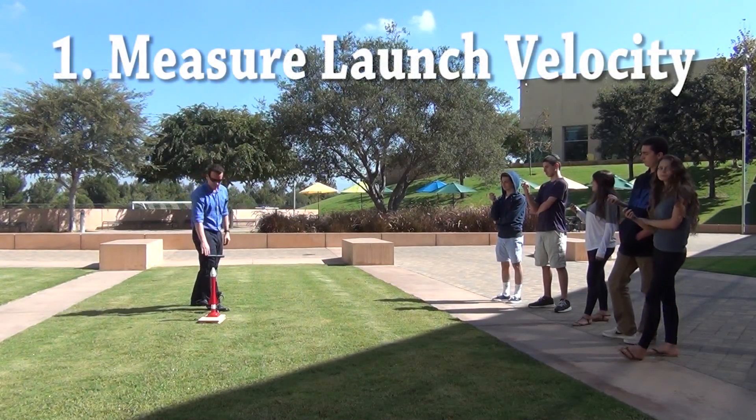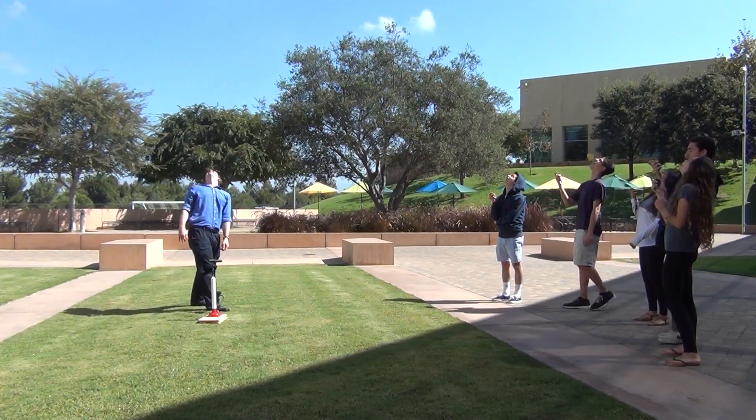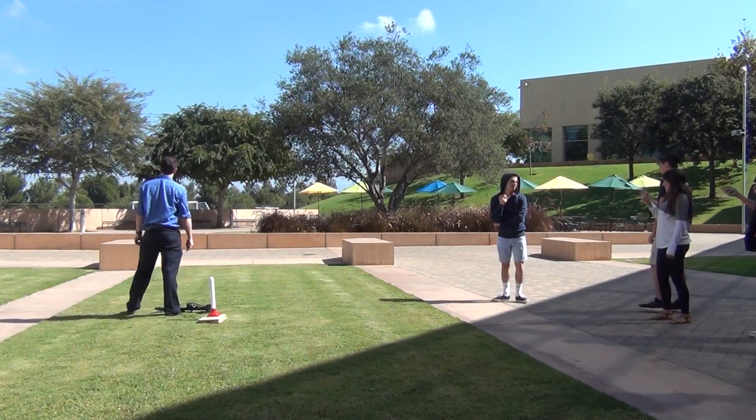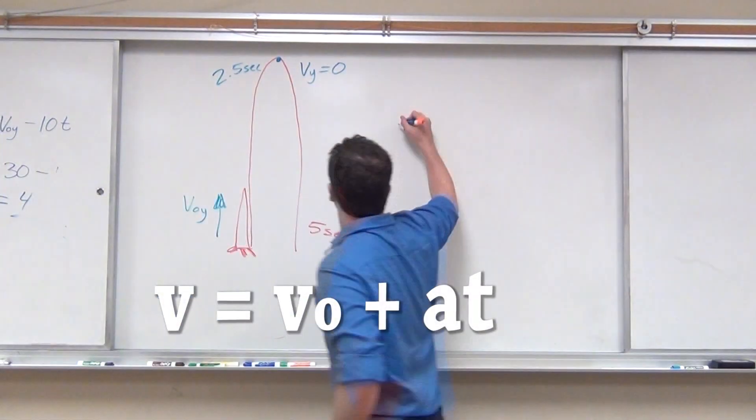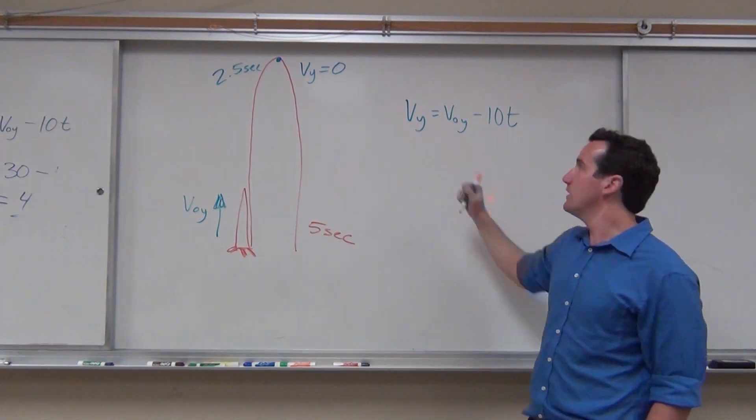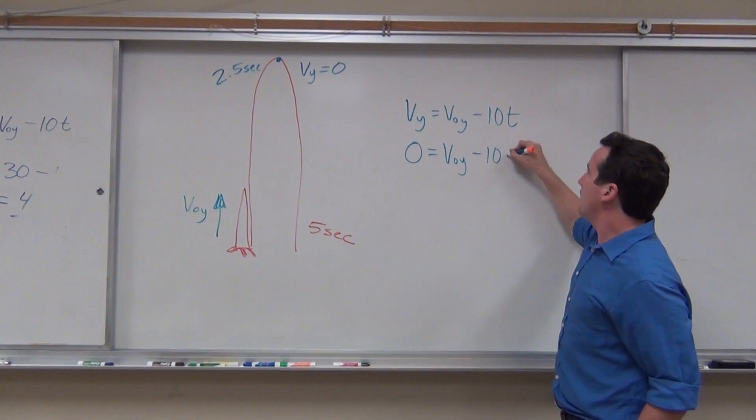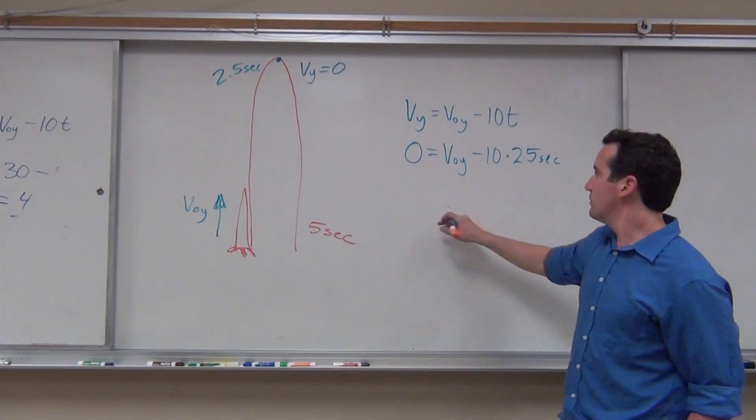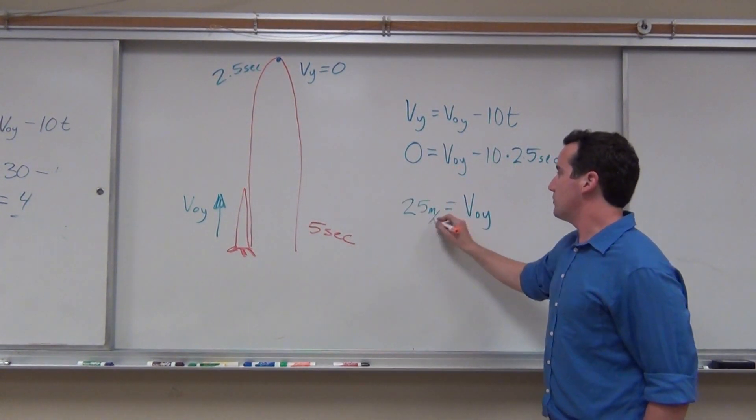The first thing you're going to want to do is determine the launch velocity. It takes about five seconds for it to go up and come back down when shot vertically. We can use the formula velocity equals initial velocity plus acceleration times time. Assuming the time to the apex is half of the total time, we get that the velocity at the top, which is zero, happens at 2.5 seconds. Since gravity is about 10 meters per second squared, this gives an initial velocity of 25 meters per second.